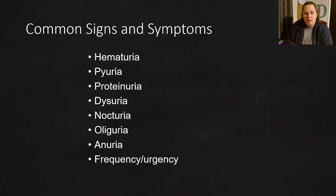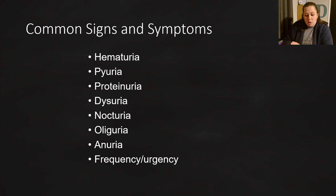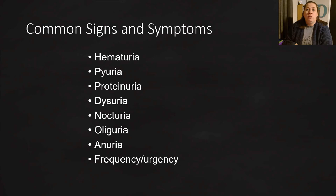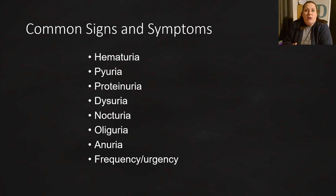Dysuria is difficulty or pain with urination. Nocturia means increased voiding or urination at night — having to get up several times to use the bathroom. Oliguria is decreased urine output, still producing some but very low amounts, whereas anuria means no urine is being produced at all. Other common signs include frequency — how often you're going to the bathroom — and urgency, meaning how quickly you need to get there once you feel the need to go.